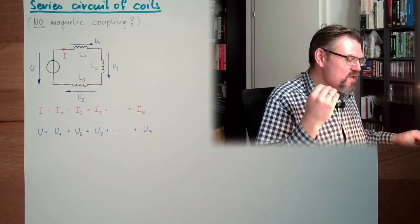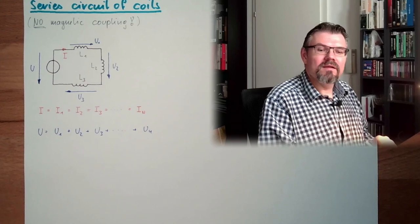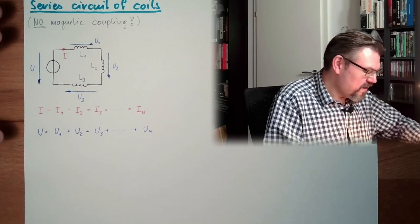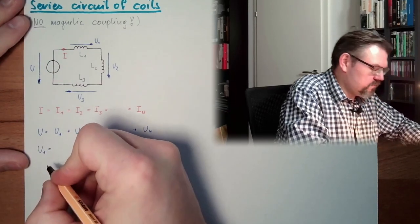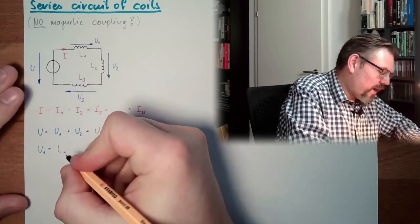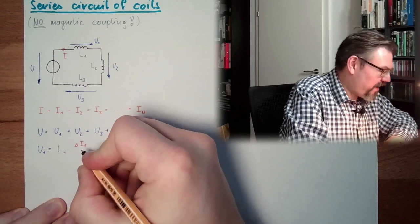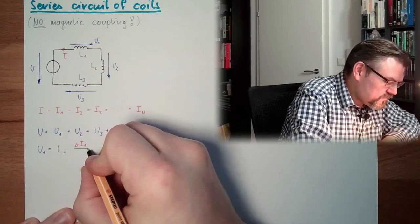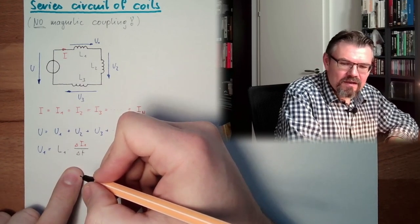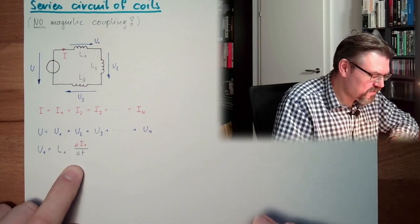So what is U at a coil, depending on the change rate of the current? We have here U1 equals L1 multiplied by the change rate. Okay, so we had this delta I1 divided by delta T. And now again, make this transition,